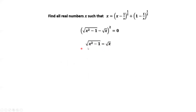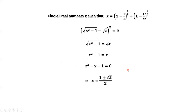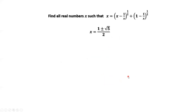Taking squares on both sides of this equation, we have x squared minus 1 equals x. Solving this quadratic equation gives x equals (1 plus or minus square root of 5) over 2. Because x is bigger than 1, x equals (1 plus square root of 5) over 2 is the only answer. That's all. Thanks for watching, and I'll see you next time.